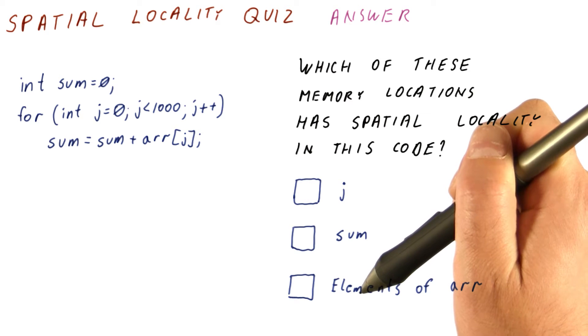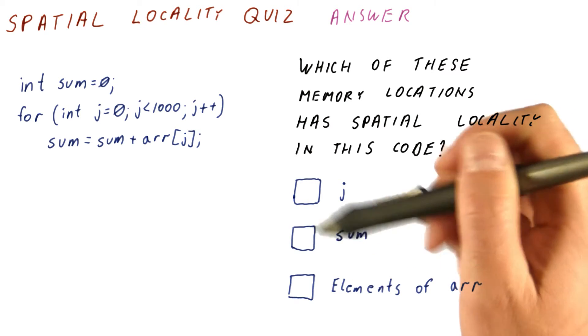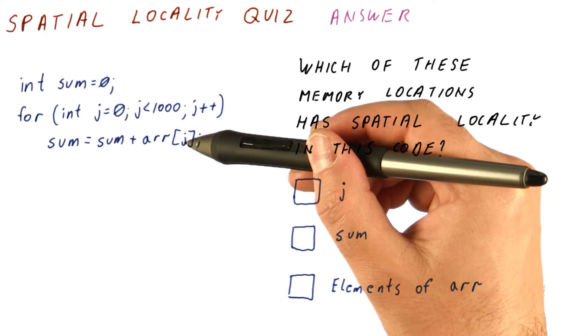For elements of array arr, we have seen that there is no temporal locality. Each element is accessed only once in this loop.